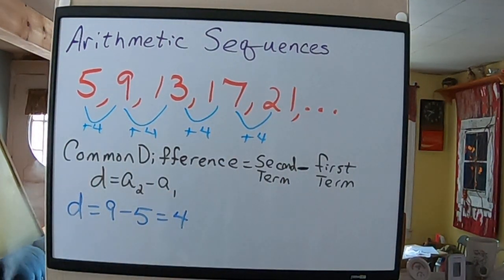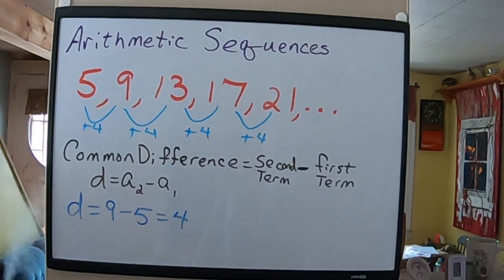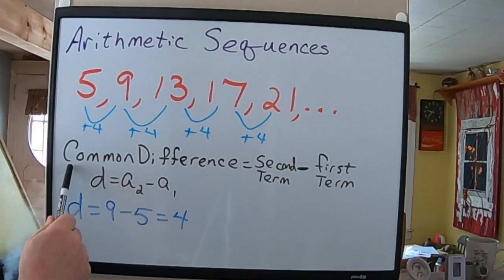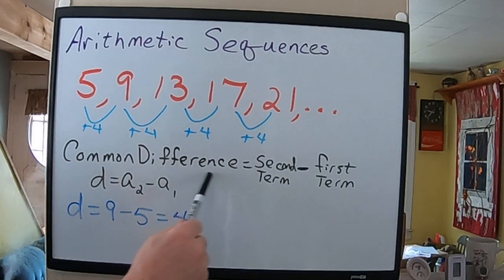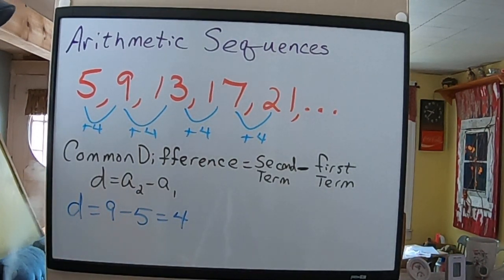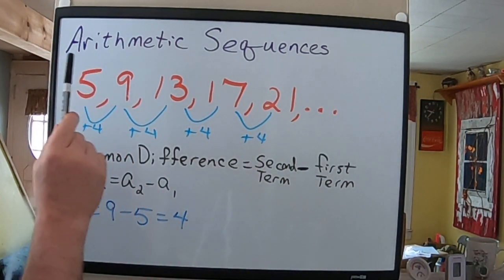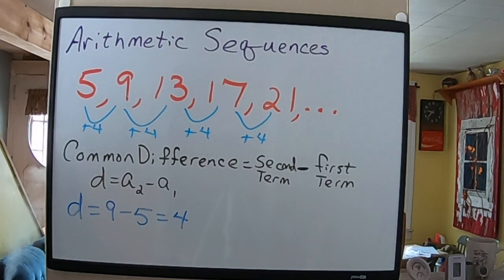But the best way, academically, mathematically I should say, to determine this is to find the common difference, and that's what D represents. The common difference is the second term minus the first term.